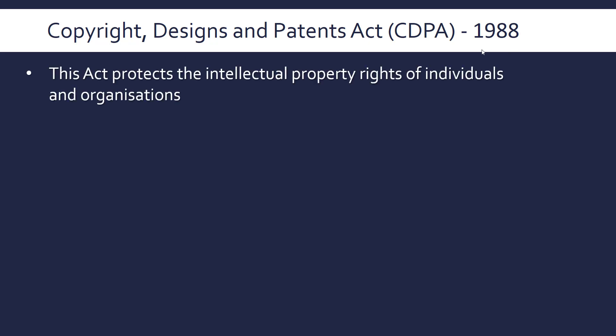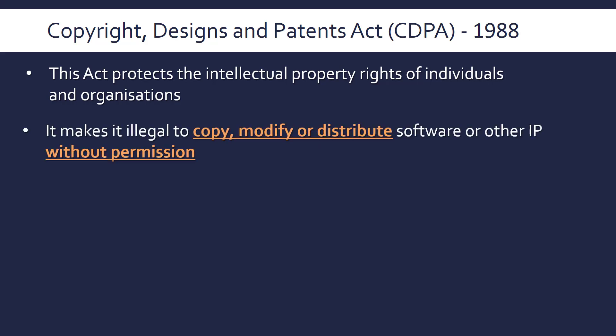This act protects the intellectual property rights of individuals and organisations. This is all about IP — creations of the mind is the legal term — so things like inventions and, in our context, algorithms, software, and things you produce on the web. This law makes it illegal to copy, modify or distribute software or other intellectual property without permission of the original author.